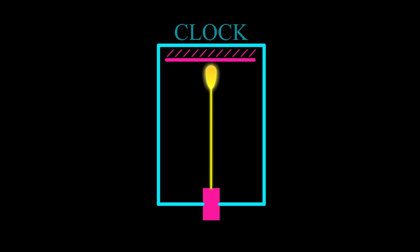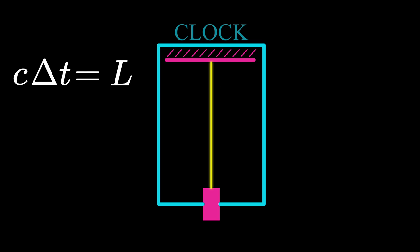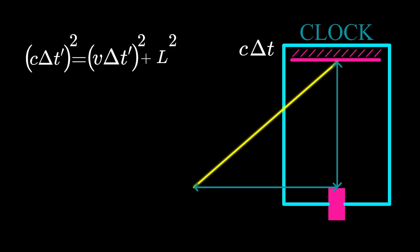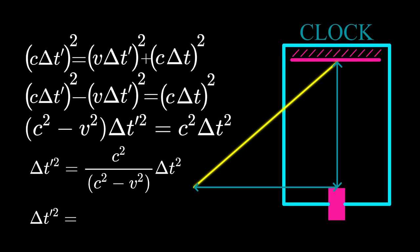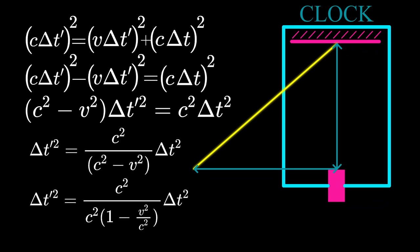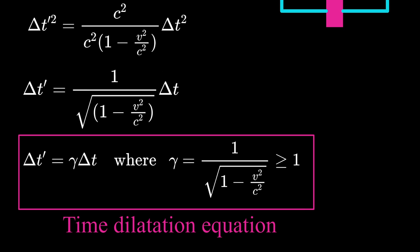We know what L is from our at-rest reference frame, so we can just plug that in, and with some manipulation we end up with this expression, which is called time dilation. This shows us that the time interval in a moving frame is always larger, and therefore we can say that if we are in relative motion, time will always slow down in the moving frame.